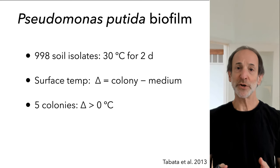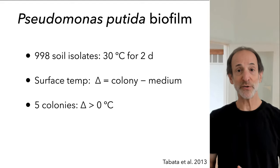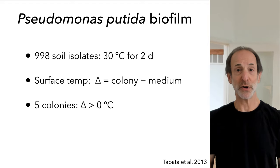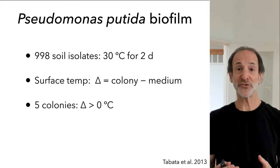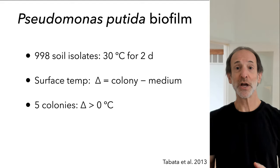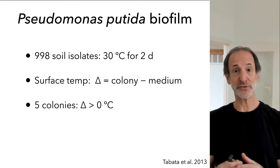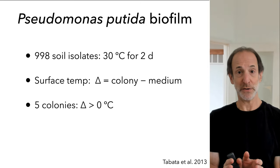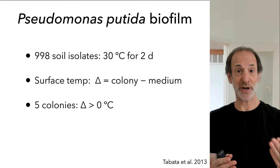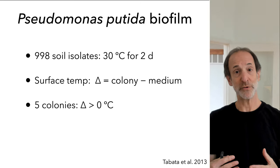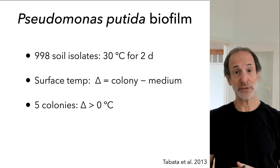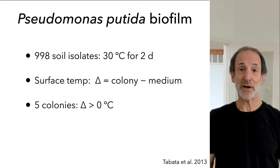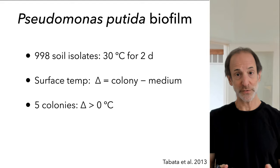Let's look at a couple of examples. The only example in the literature for the cooperative use of metabolic heat comes from a study of bacterial biofilms growing in the soil. In this study, they collected 998 isolates from the soil, brought them into the lab, and grew them at 30 degrees C for two days on open plates. They then measured the surface temperature of the colonies and the surrounding medium, defining the difference as evidence of colony-raised temperature. They found five colonies that raised their temperatures relative to the surrounding environment.